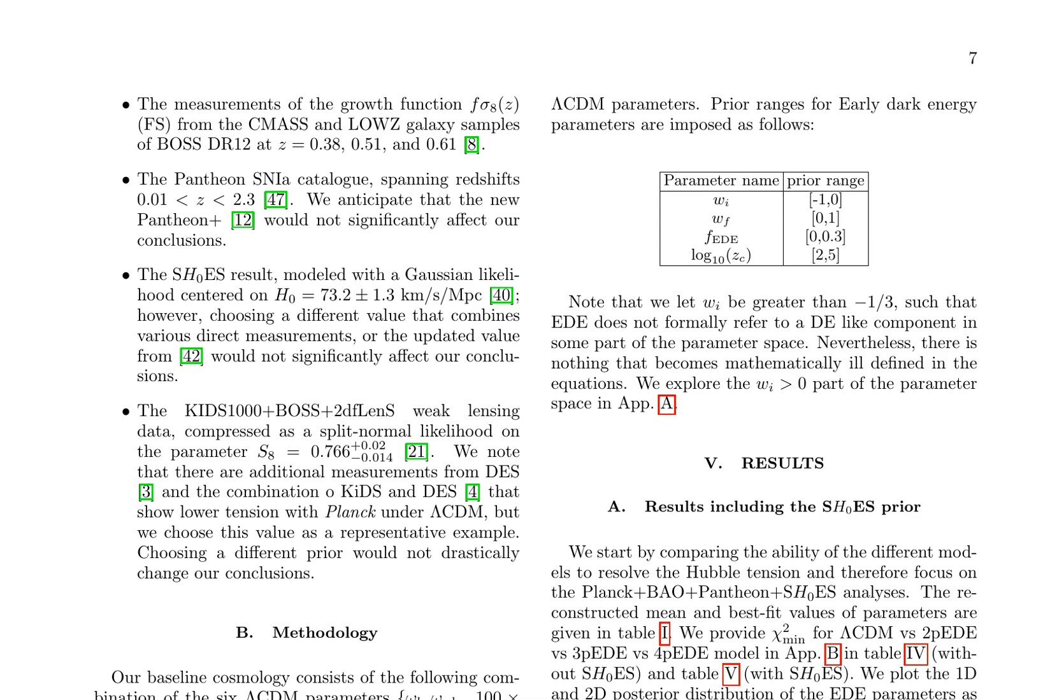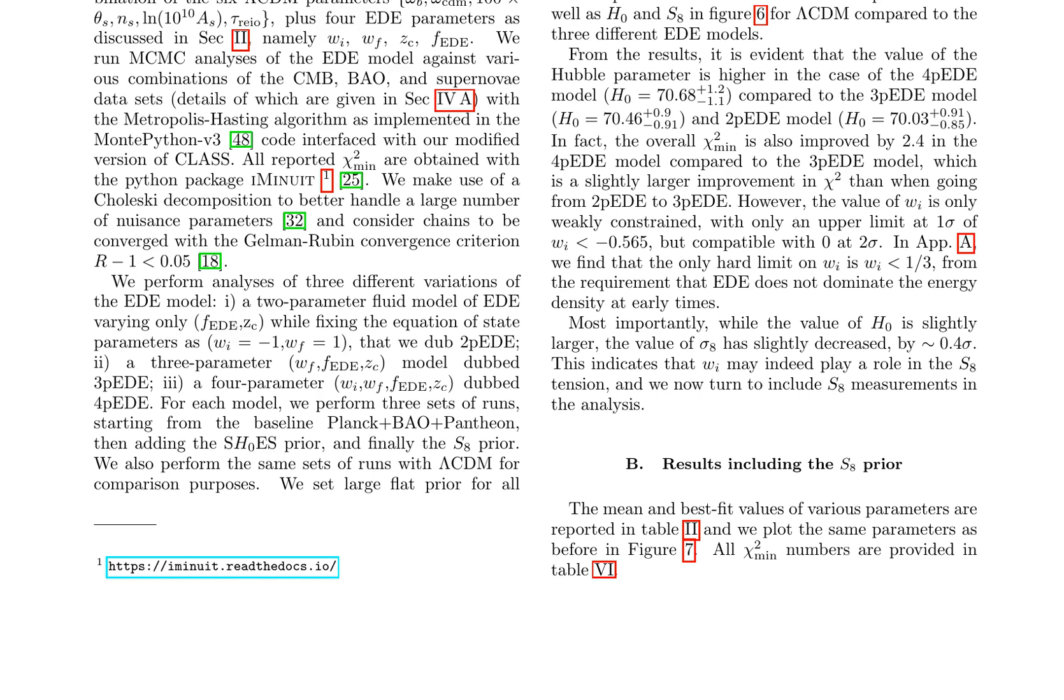The early dark energy EED model is examined in this study, with a focus on its methodology and results. The baseline cosmology is established through the specification of lambda-CDM parameters and additional EED parameters. Markov Chain Monte Carlo (MCMC) analyses are conducted using various combinations of Cosmic Microwave Background (CMB), Baryon Acoustic Oscillation (BAO), and Supernovae datasets. Three EED model variations are explored, each with distinct parameters. The results reveal that the 4-parameter EED model exhibits an improved chi-squared minimum and a higher Hubble parameter value compared to the 3-parameter EED models. However, the equation of state parameter WI is only weakly constrained, with an upper limit of WI less than 0.565 at 1 sigma. The incorporation of the S8 prior further enhances the understanding of the model's implications.